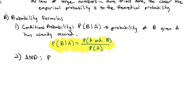What about the probability that it's blue or even? For blue or even, there are three blue cards out of five, plus two even cards out of five, minus the overlap — one card that is both blue and even out of five. So 3 plus 2 minus 1 is 4/5, which gives a probability of 0.8 that it is blue or even.